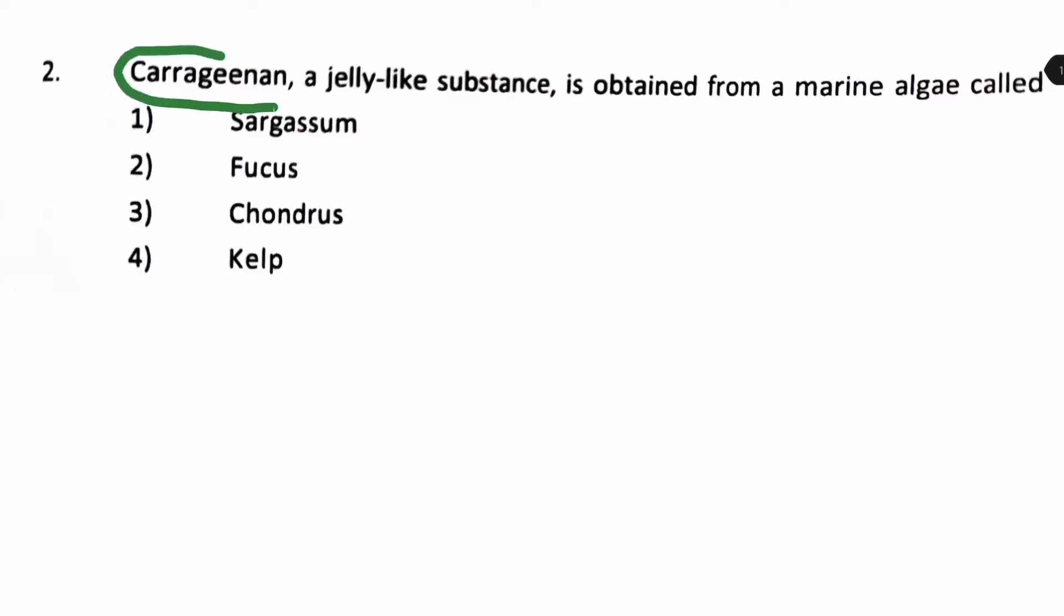Carrageenan is actually a substance produced by the red algae. And from here, we can see the option number 1, option number 2. Fucus, Kelp, Sargassum, Fucus and Kelp are from the brown algae.